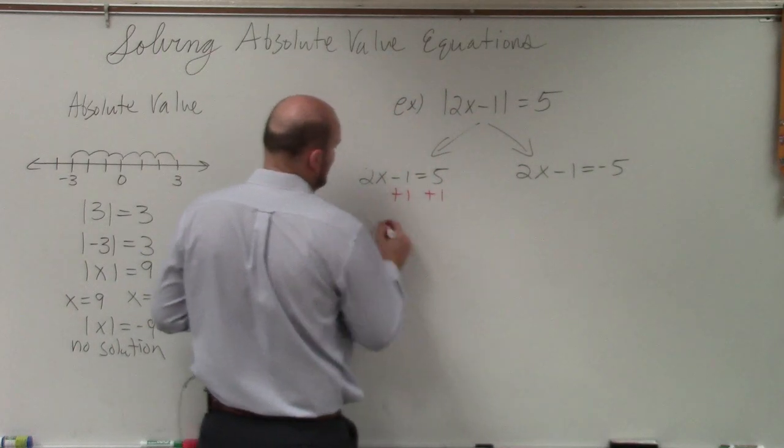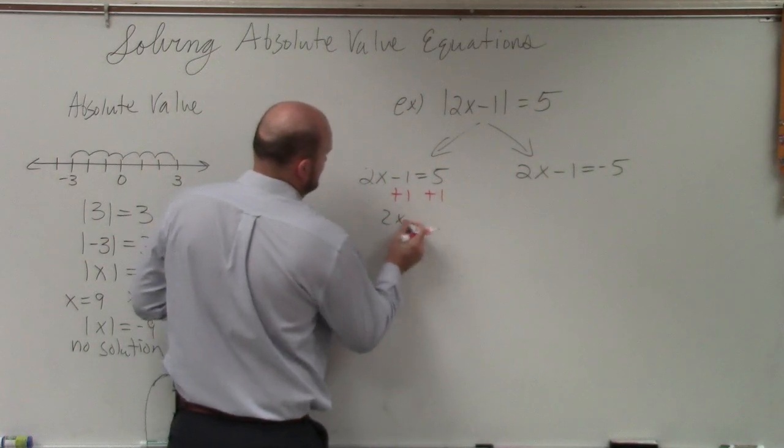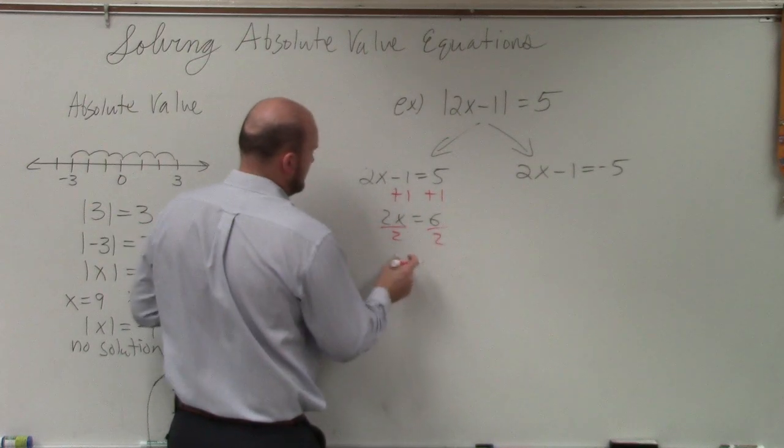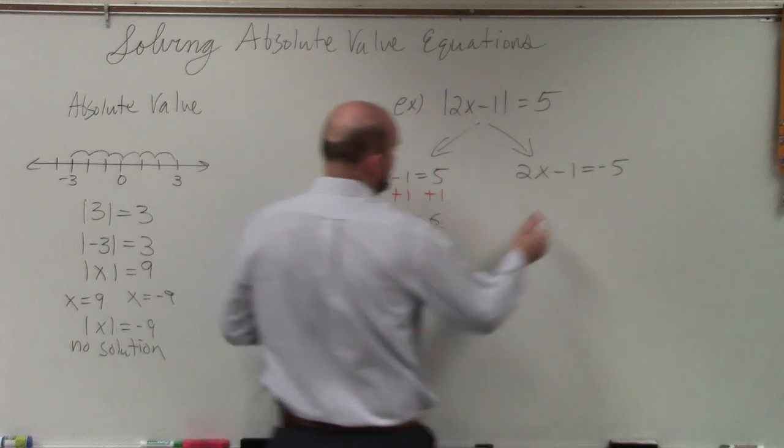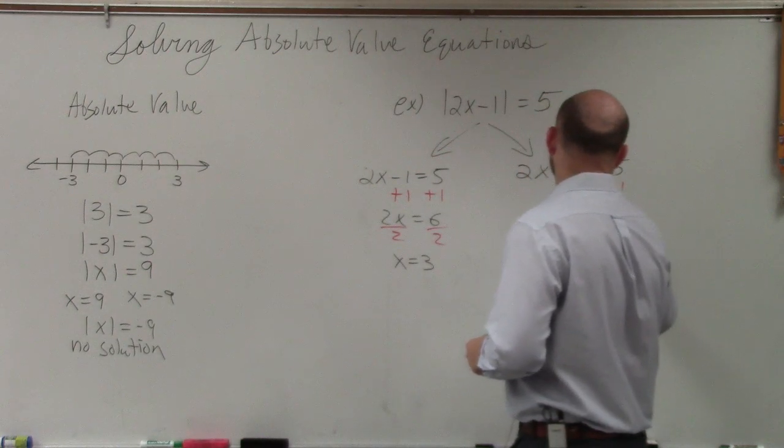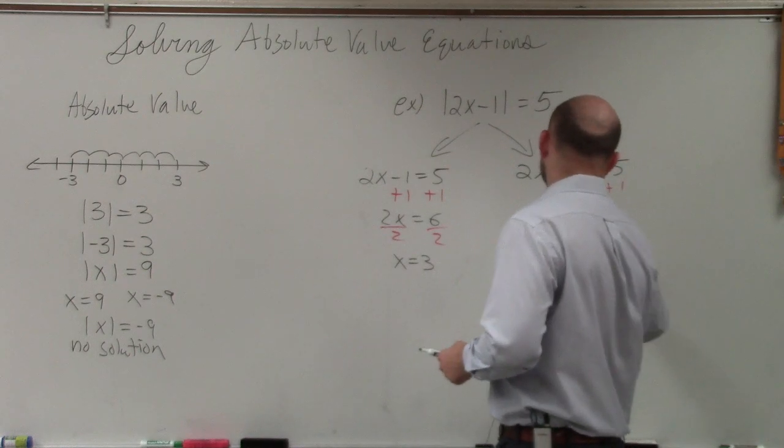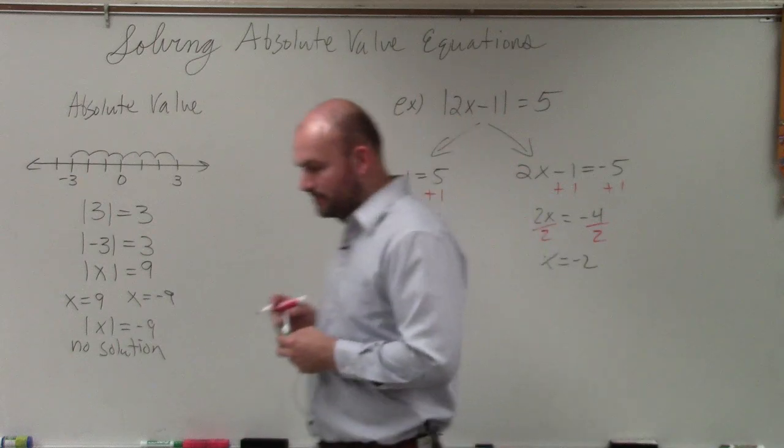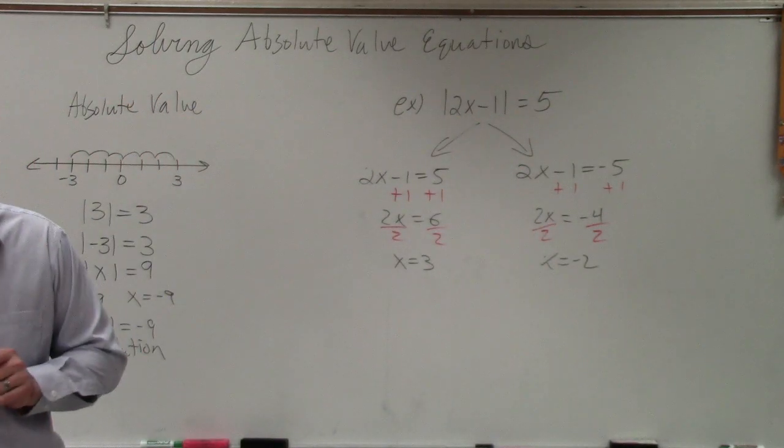So you add 1, add 1, 2x equals 6, divide by 2, divide by 2, x equals 3. Add 1, add 1, 2x equals negative 4, divide by 2, divide by 2, x equals negative 2. So I'm solving pretty quickly because hopefully that's not an issue.